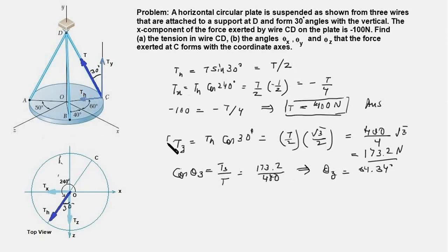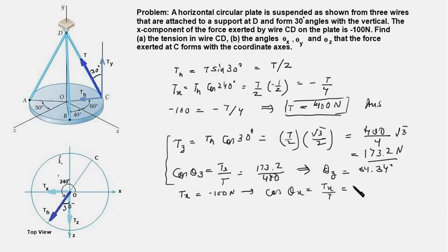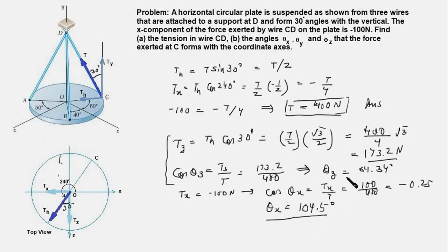From Tz we have computed θz. Now Tx = −100 N, so cos(θx) = Tx/T = −100/400 = −0.25, and therefore θx = 104.5 degrees. Summarizing: θx = 104.5°, θz = 64.34°, and θy = 30° (given in the problem statement). We now have all three angles and the solution is complete.